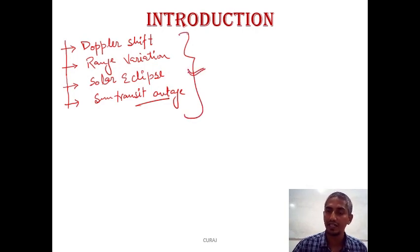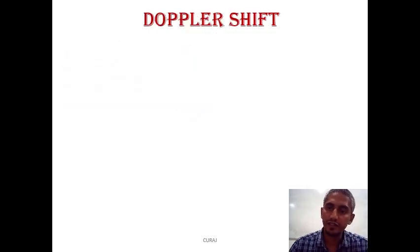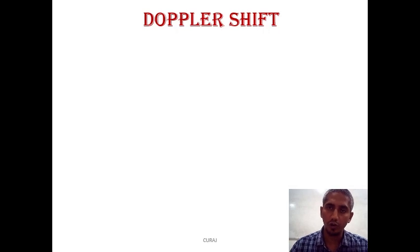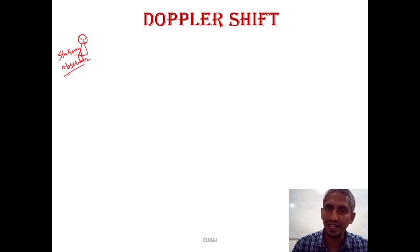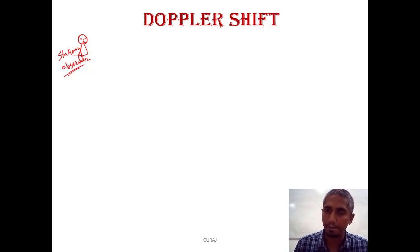The first orbital effect on the communication system between the earth station and satellite is the Doppler shift. Doppler shift is related to the shifting in frequency. When we talk about a stationary observer in the case of satellite communication, that means the earth station — the earth station that is not moving with time — that is the stationary observer.